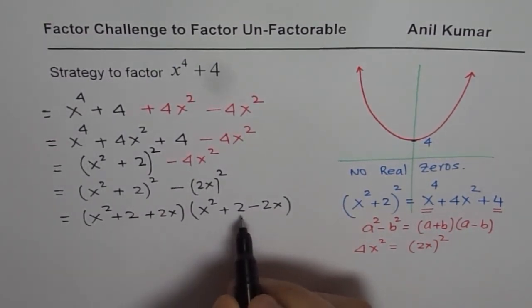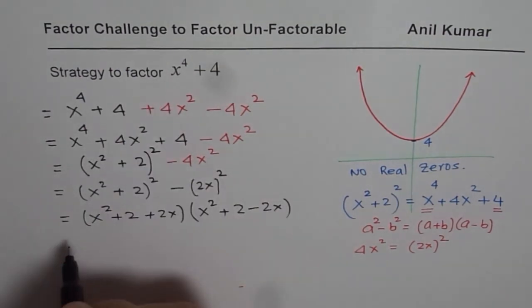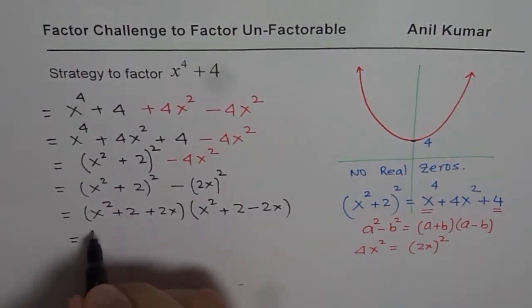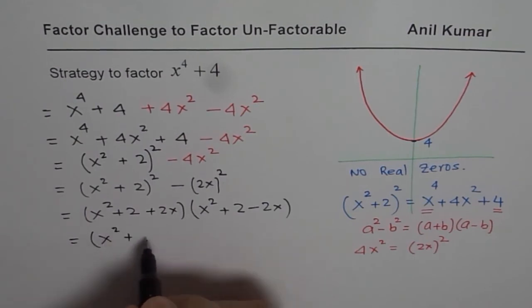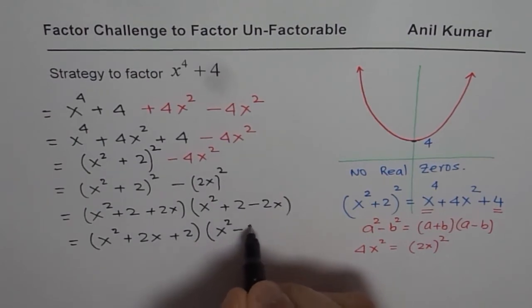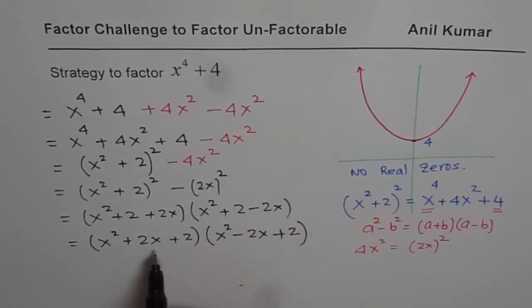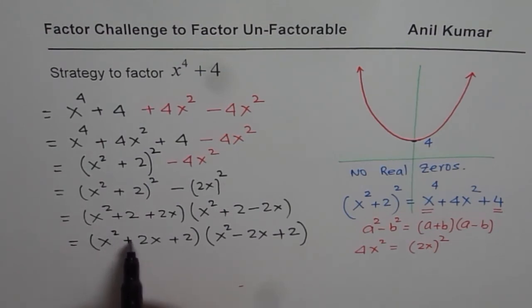Since we are multiplying two terms, they are factors of the given expression. Let me rewrite this as x square plus 2x plus 2 times x square minus 2x plus 2. It is good practice to write them in order of degree.